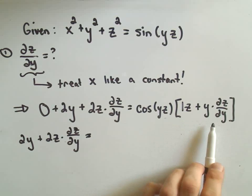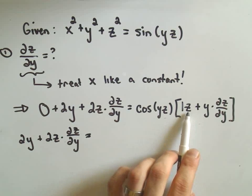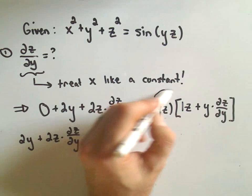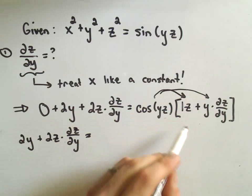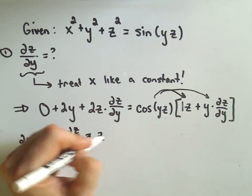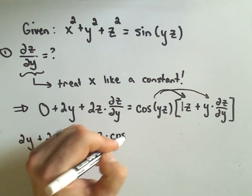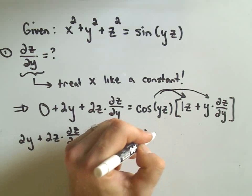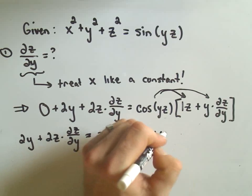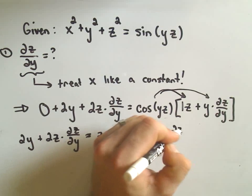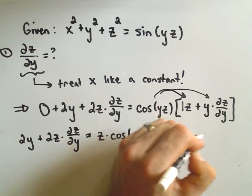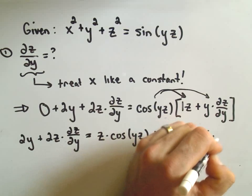On the right side, since we have two terms in the brackets, I'm going to distribute things out. So the cosine of yz would have to get multiplied to both terms. We're just distributing here. So I'm going to put the z out front. We'll get z times cosine of yz. And then when we distribute again, we'll get plus, I'm going to write the y partial of z with respect to y, and then we have cosine of yz.